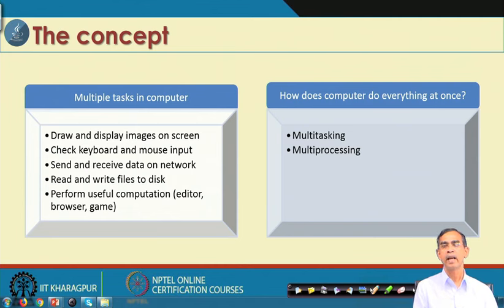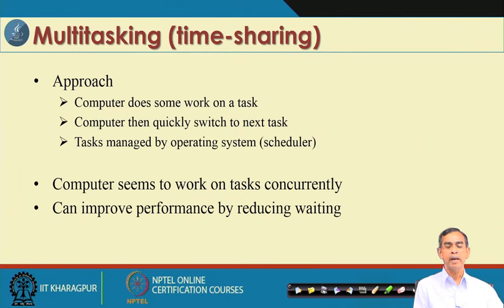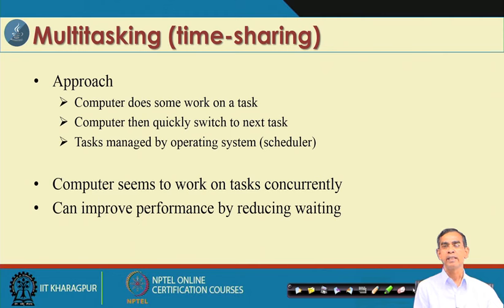How can multi-threading actually be achieved in our system? There are in fact two ways: multitasking and multiprocessing. Multitasking is alternatively called time sharing. If we have to run multiple programs together, a part of one program can share the CPU time or some other resource time. The idea is that multiple programs have their own time slots and each program can use their time slots to execute. This is how multitasking can be achieved in a time sharing manner.